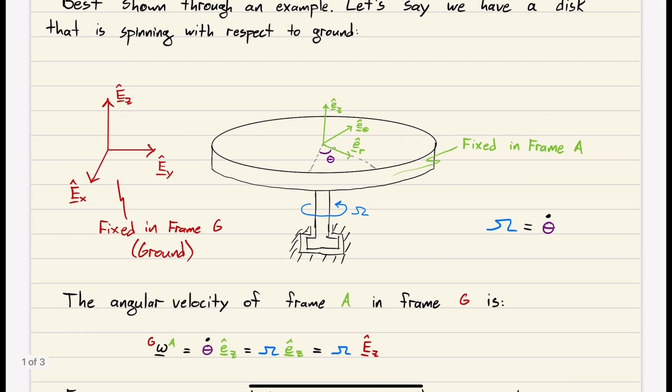Say we have a spinning disk. We have our inertial frame fixed to ground, that's our red basis. Then we have our green basis, which is fixed to the disk. The ground is frame G and the disk is frame A. The red basis is fixed in G and the green basis is fixed in A, which is fixed to the disk.